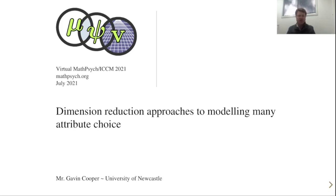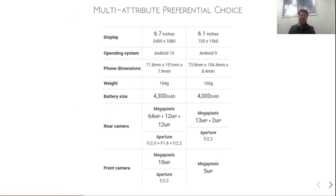So I want to talk today about some approaches in reducing the number of dimensions when modeling many-attribute choice. In particular, when I'm talking about many-attribute choice, I'm really referring to multi-attribute preferential choice. This is where people exhibit preferences, either in their purchasing behavior or in explicit choices,